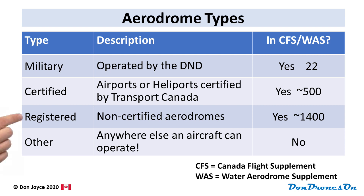Next is registered aerodromes — any aerodrome listed in the CFS or WAS but not certified nor military. There are about 1,400 of these. Finally, there is everything else: abandoned airfields, grassy strips, and even lakes. These are not in the CFS or WAS but are still legitimate aerodromes that drone pilots need to be aware of. We'll walk through each of these kinds of aerodromes so you can properly identify them and understand the applicable drone regulations, and I'll show you an example of each kind.